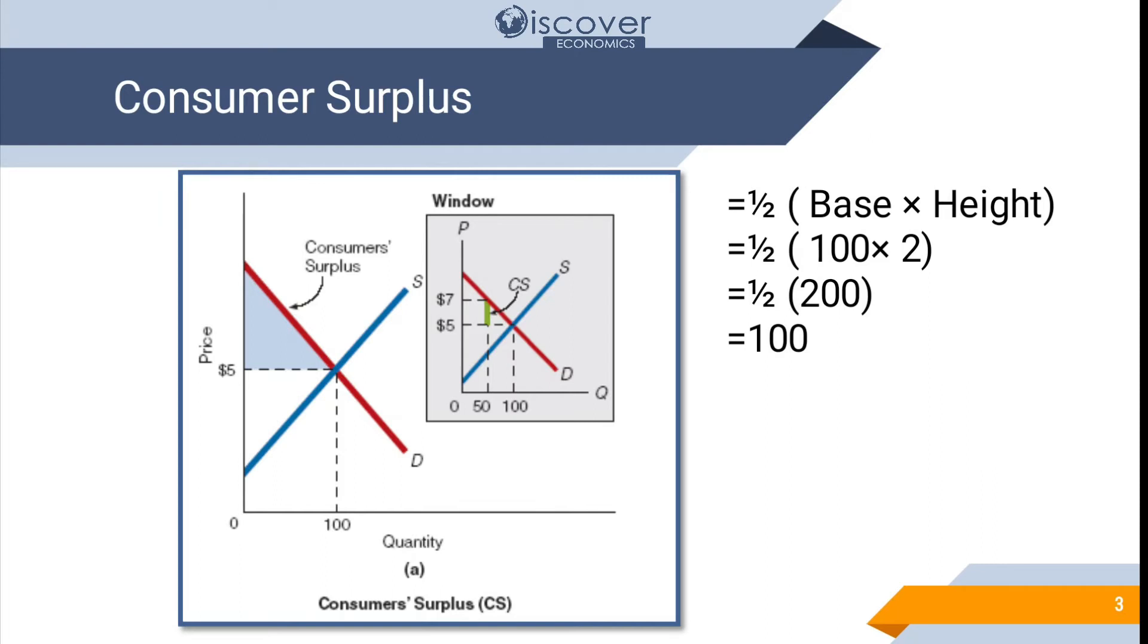Now how to calculate the total consumer surplus of a person? We are having a formula that is 1/2 base times height. So total base over here if you look down here will be from 0 to 100. So 100 will be the total base and 7 minus 5 means 2. So 2 will be the height. So 100 times 2 will be 200 and when we are going to take the half of it we will get 100. So 100 is the consumer surplus in this diagram.